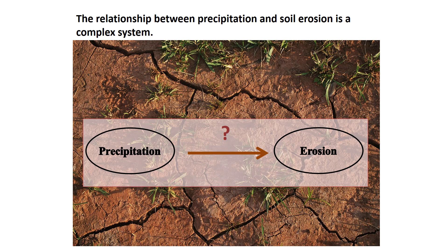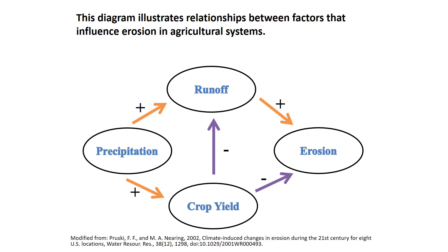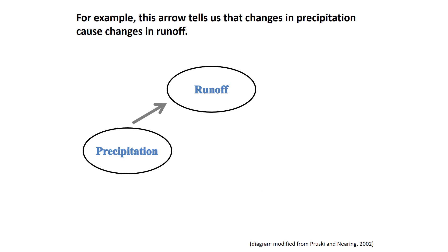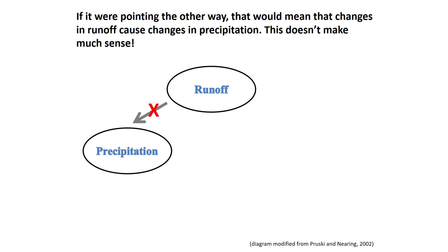From the RUSLE, we know that changes in precipitation will impact soil erosion loss, but this equation doesn't allow us to easily consider interactions between factors. A systems diagram is another way to think about this more conceptually. Now we are going to focus on a smaller-scale system. This system's diagram is based on modeling of the effects of climate change on erosion in various agricultural regions in the U.S. The direction of the arrows indicates cause and effect relationships — for example, changes in precipitation cause changes in runoff.